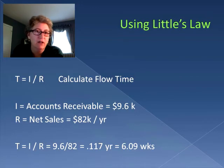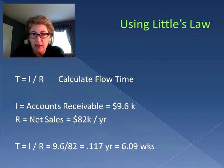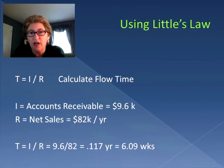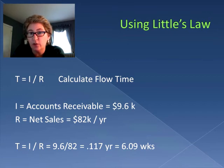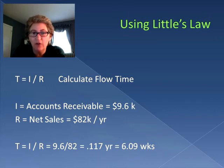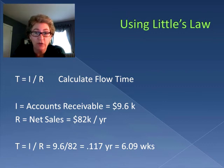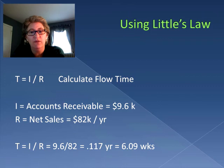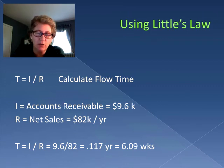Our flow time is our inventory divided by our throughput rate. Our accounts receivable was $9,600 and our net sales was $82,000 per year. So it takes 0.117 of a year for us to get paid. Converting that to weeks, we multiply by 52, and it takes us over six weeks from the time we bill our customer on average to the time we get paid back.